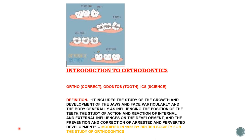The last part is the prevention and correction of arrested development. It is possible to prevent malocclusion — nowadays, if we identify that a child is going to develop malocclusion, we can prevent it rather than correcting it later. Prevention is better than cure. If a person has grown up and development is arrested, then we correct whatever arrested development exists.